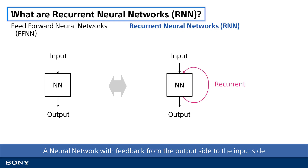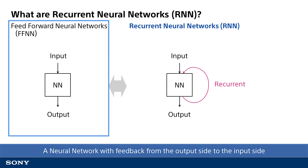First, let's discuss what exactly recurrent neural networks are by comparing them to feed-forward neural networks, which were discussed in previous videos as an image recognition solution. With feed-forward neural networks, data is processed in only one way from input to output. In this neural network, an image, for example, is input and then processed in sequence. The end result of the processing is the output of an image recognition result.